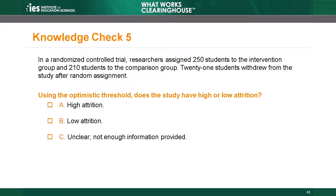Knowledge Check 5. In a randomized controlled trial, researchers assigned 250 students to the intervention group and 210 students to the comparison group. 21 students withdrew from the study after random assignment. Using the optimistic threshold, does the study have high or low attrition? A: High attrition. B: Low attrition. C: Unclear, not enough information provided.